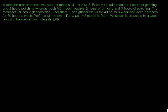A manufacturer produces two types of models: model 1 and model 2. Each model 1 requires 4 hours of grinding and 2 hours of polishing, whereas each model 2 requires 2 hours of grinding and 5 hours of polishing. There are two steps for production of model 1 and model 2 — one is grinding and the other is polishing.